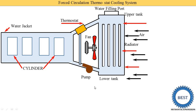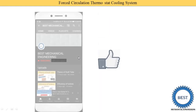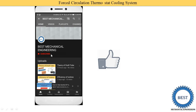The thermostat is also connected to the lower hose pipe via a bypass line. That completes the construction overview.